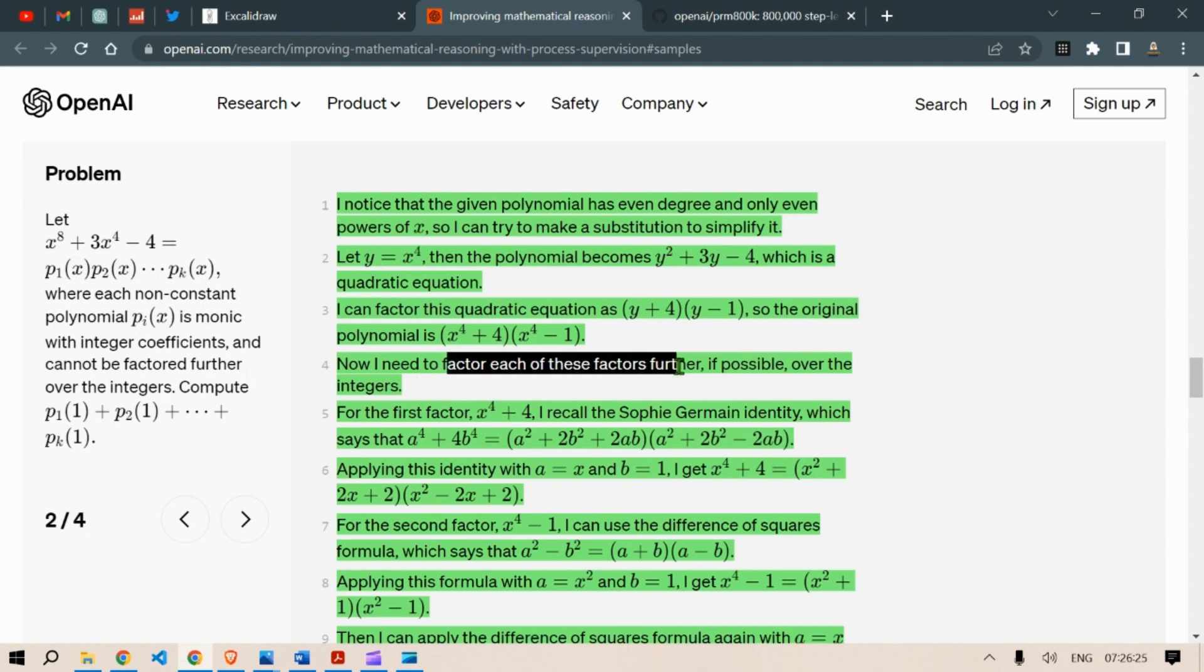Now, I need to factor each of the factors further, if possible, over the integers. For the first factor, x to the power 4 plus 4, I recall the Sophie Germain identity, which says that a to the power 4 plus 4b to the power 4 is a square plus 2b square plus 2ab into a square plus 2b square minus 2ab. We apply this identity with a is equal to x and b is equal to 1, and we get x to the power 4 plus 4 is equal to x square plus 2x plus 2 and x square minus 2x plus 2.